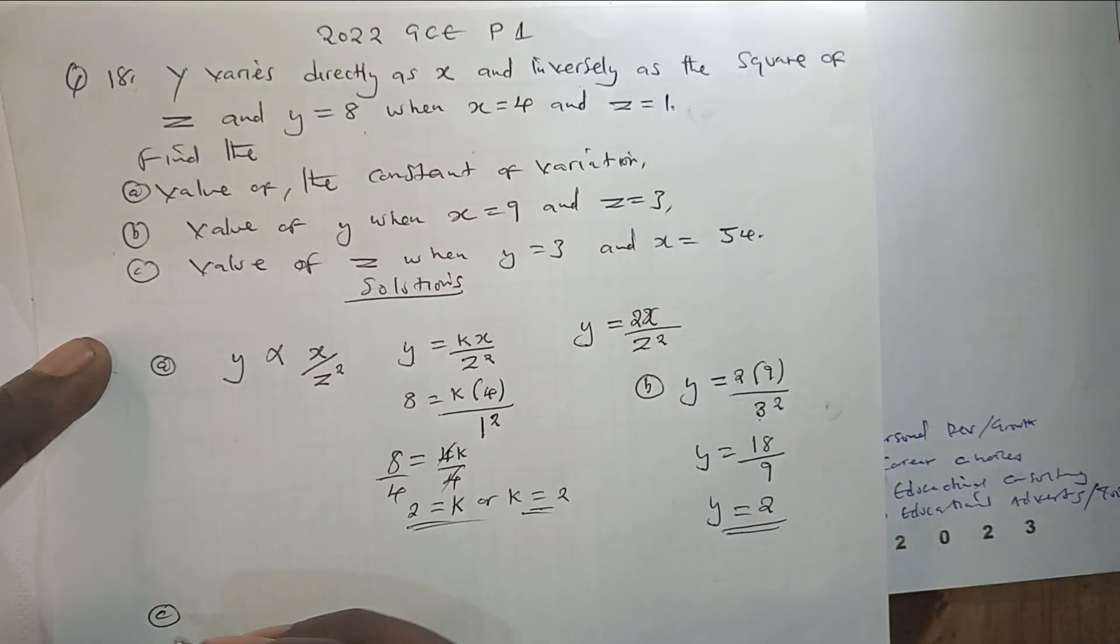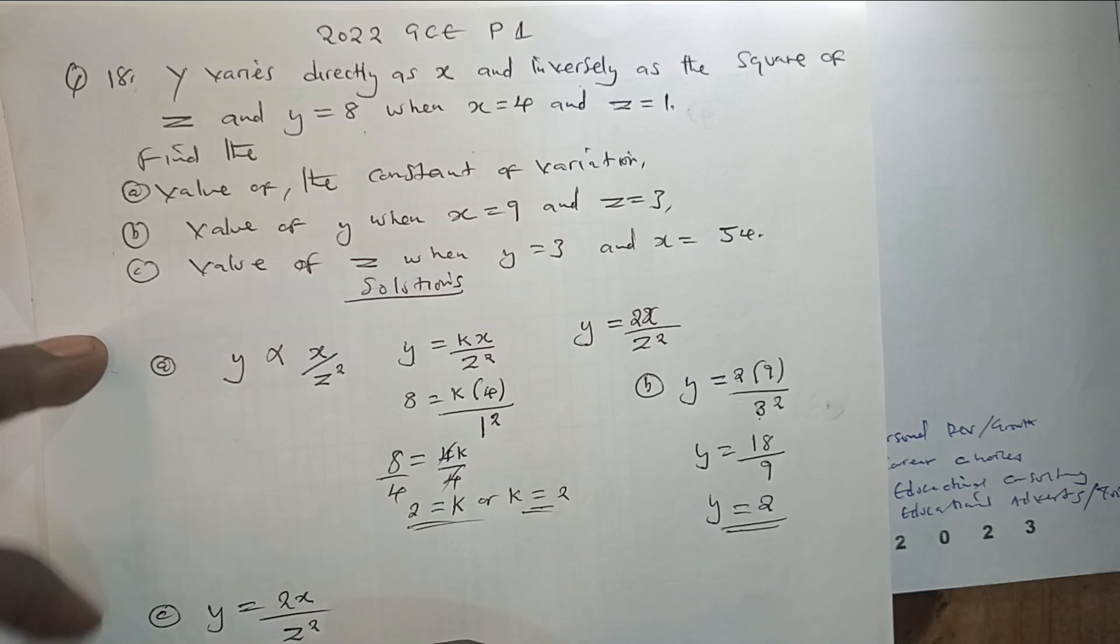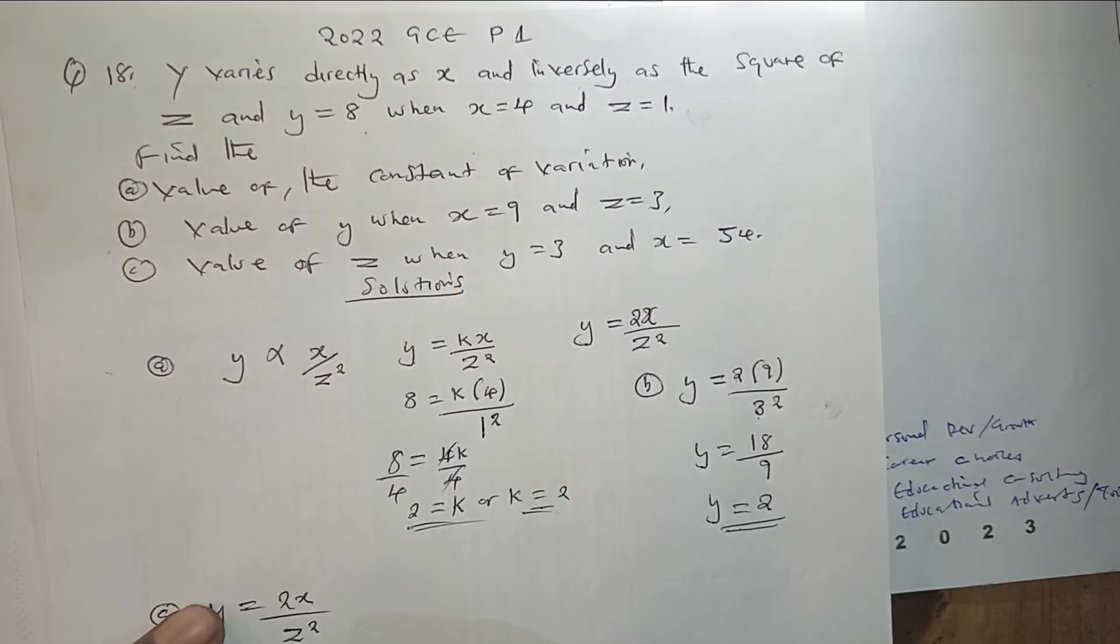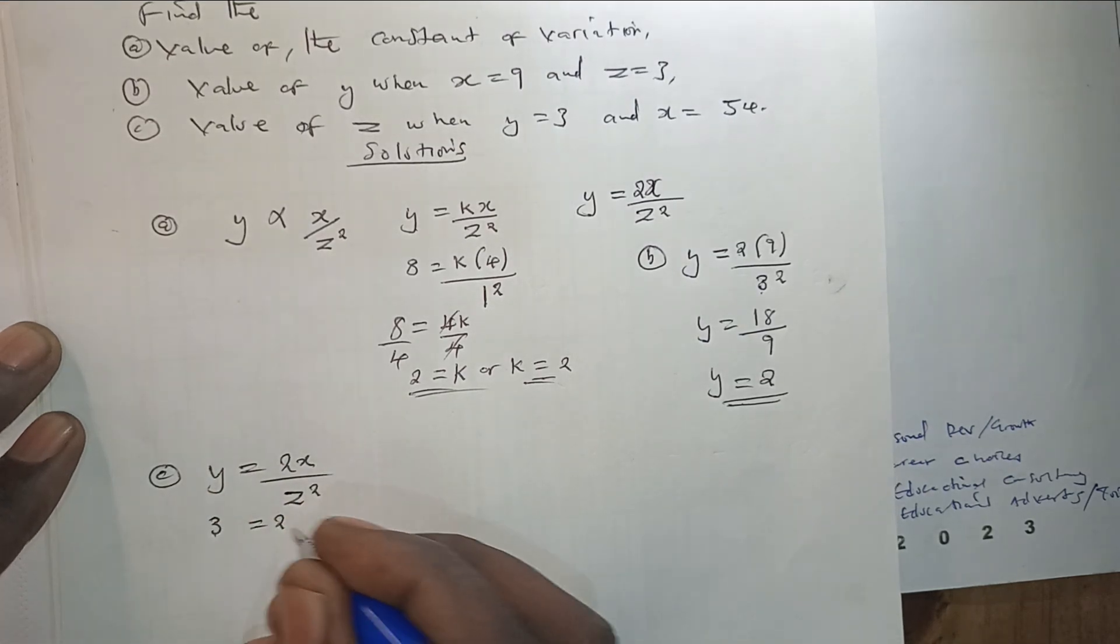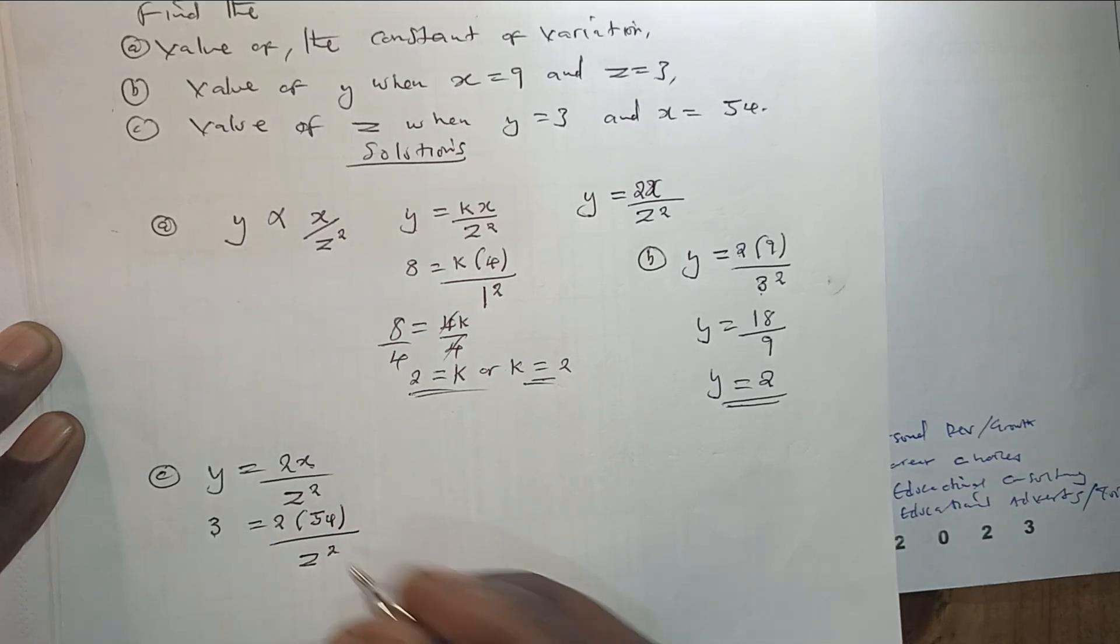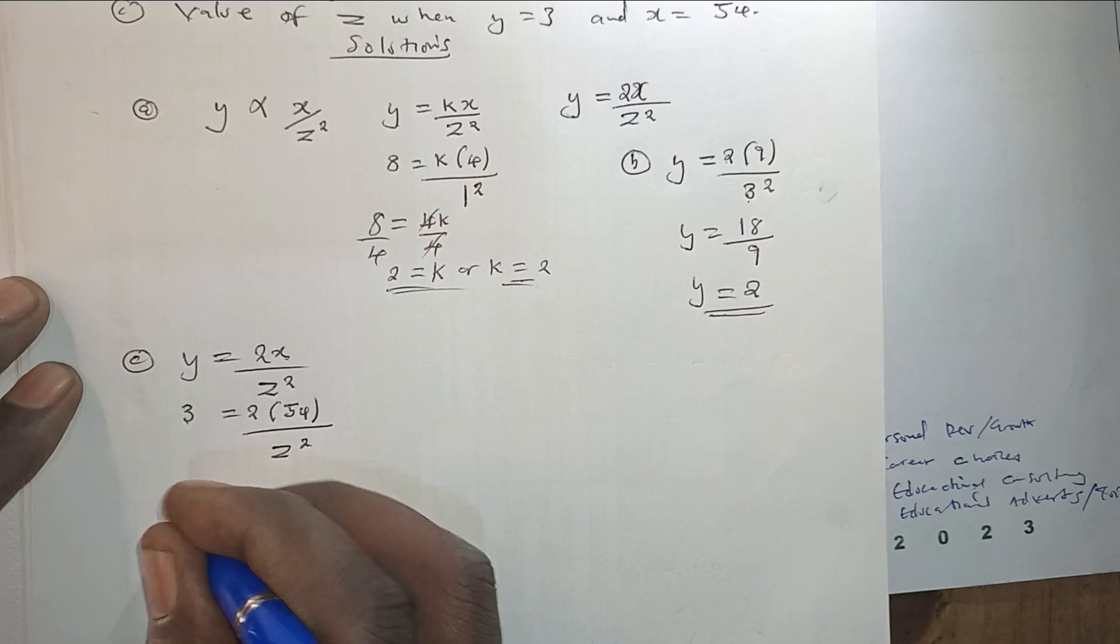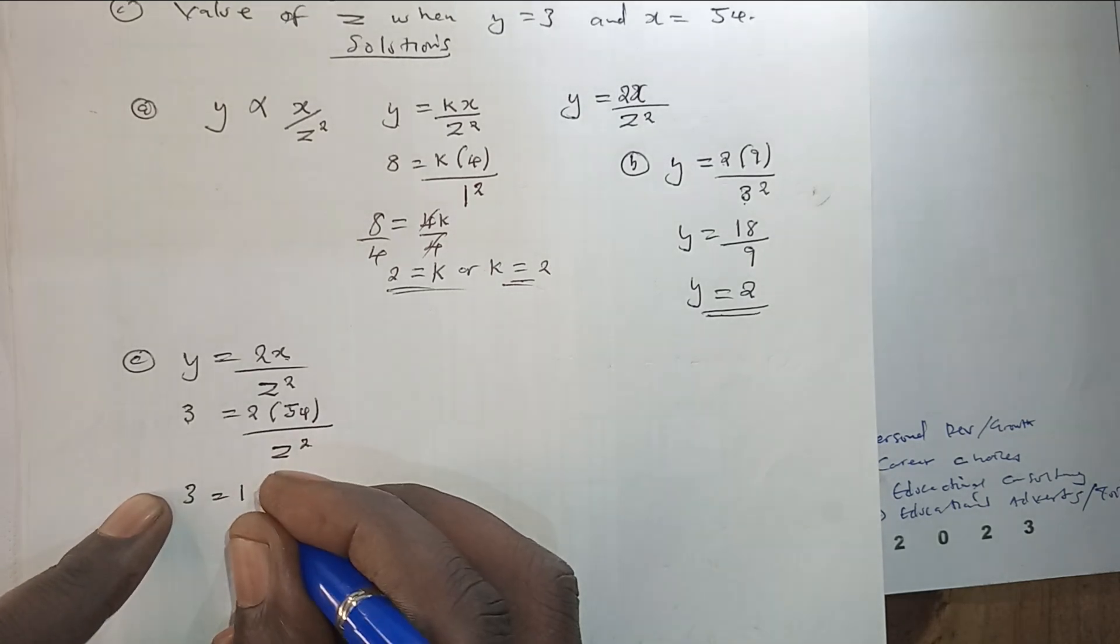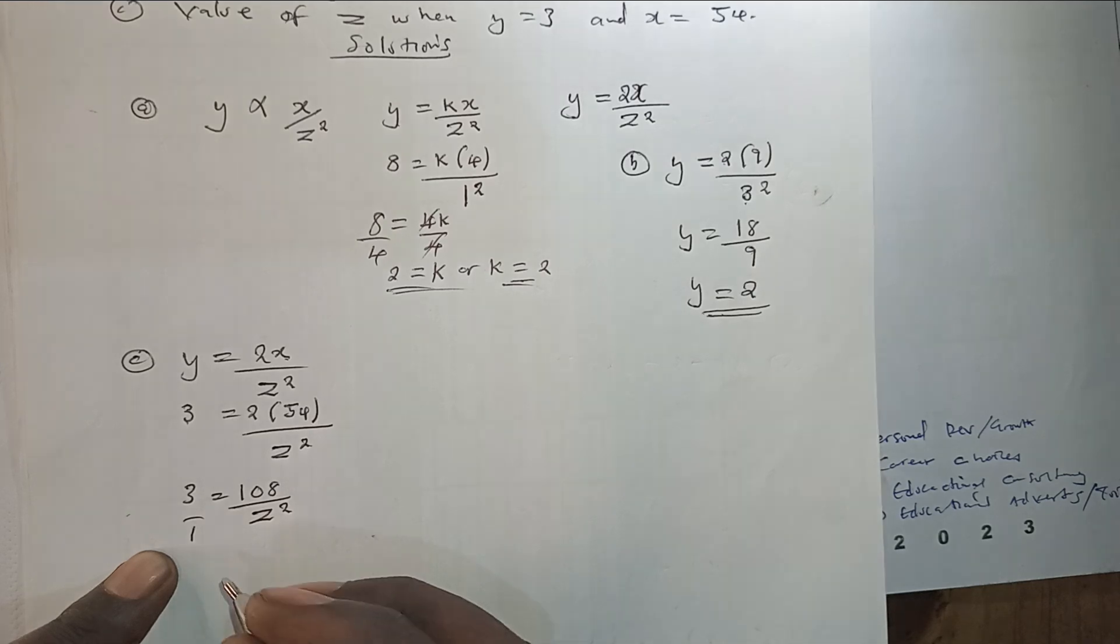Coming to part C, we are still using the same equation, Y equals 2X over Z squared. Now, this time the question is asking us to find the value of Z when Y equals 3. So for Y, we shall substitute 3 equals 2, then for X it is 54, so we put 54 here. This is being divided by Z squared. So next we can just simplify, and we are going to have 3 equals 2 by 54, we are going to get 108 over Z squared. So now because this is a fraction, we can make this part as a fraction and then we simply do cross multiplication.